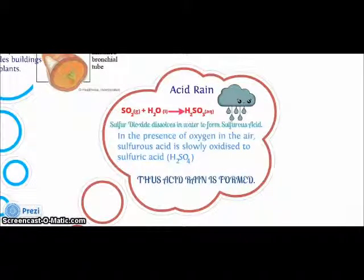Acid rain: Sulfur dioxide dissolves in water to form sulfurous acid. In the presence of oxygen in the air, sulfurous acid is slowly oxidized to sulfuric acid. Thus, acid rain is formed.